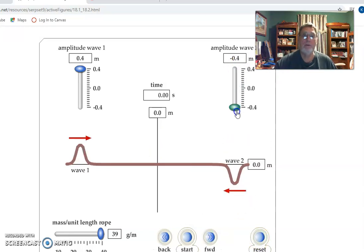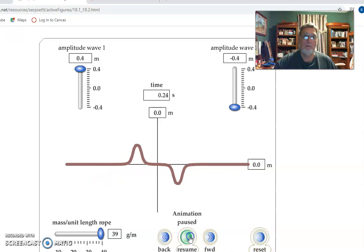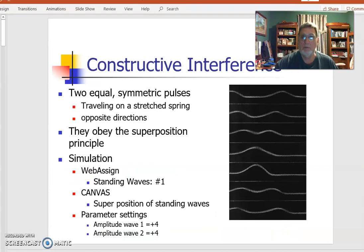As opposed to if they're inverted and traveling toward each other, it momentarily disappears. Reset that and run it. Again, we can slow it down. See, it looks like there's no wave, but you keep on going, and there is a wave. So that's kind of the two extremes for wave pulses.